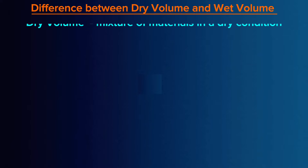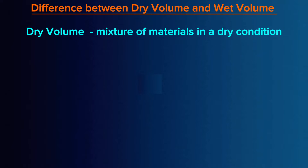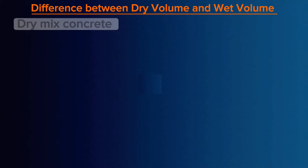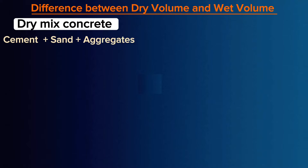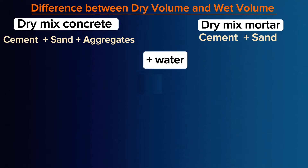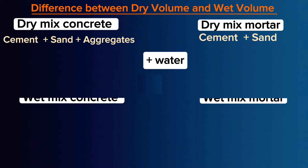Basically, dry volume means a mixture of materials in a dry condition without water, whereas wet volume means a mixture of materials in a wet condition with water. Dry mix concrete will be a mixture of cement, sand and aggregates, and dry mix mortar will simply be a mixture of cement and sand. When water is added to these, then it becomes wet mix.